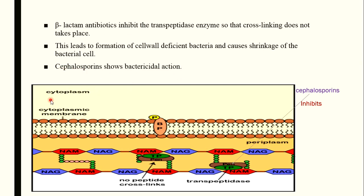You can see here: cytoplasm and cytoplasmic membrane are present. Normally, NAAM and NAAG along with D-alanine peptide linkages, using the transpeptidase enzyme, complete the transpeptidation process to form the bacterial cell wall. When cephalosporins inhibit this transpeptidase enzyme, cross-linking of peptidoglycan residues does not take place, causing shrinkage of the bacterial cell, cell-wall-deficient bacteria, and ultimately bactericidal action — killing the bacteria and reducing bacterial infection.